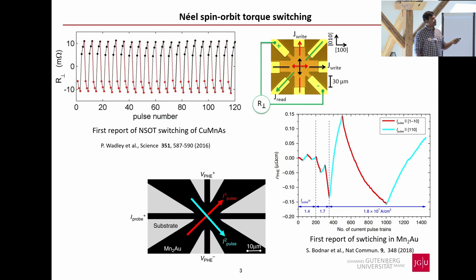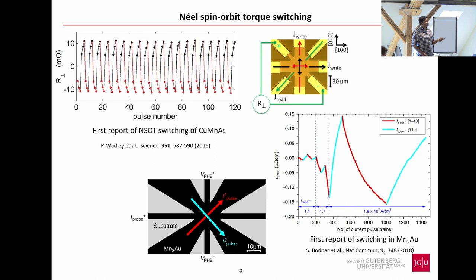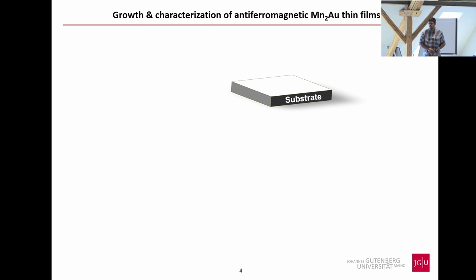This effect can be found only in two compounds: Mn₂Au and CuMnAs. The theoretical prediction was followed by experimental reports — first in CuMnAs from the group at Nottingham University, and subsequently in Mn₂Au at Mainz University. That was the work done before I joined the group. What I focus on is not switching per se; rather, I mainly study interfacial effects involving Mn₂Au.